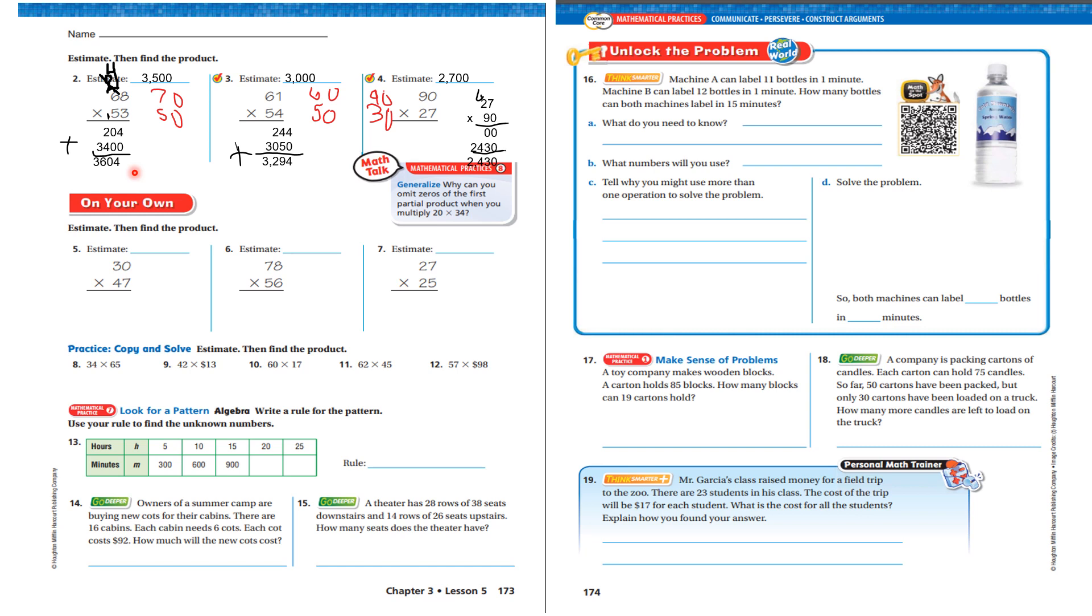Let's look at the next one. I'm going to estimate this to be 3,000. 61 is close to 60. 54 is close to 50. 6 times 5 is 30. I add those two zeros. I get 3,000. 4 times 1 is 4. 4 times 6 is 24. 5 times 1. Oh, I had to put the place value in there. I can't forget that. 5 times 1 is 5. 5 times 6 is 30. Add it up, I get 3,294.